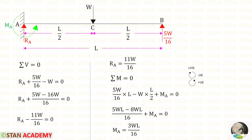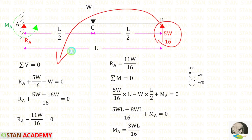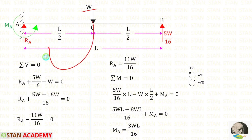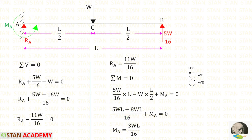Now let us apply sigma M equals 0 to find MA, taking moment about point A, moving towards the left hand side where clockwise is negative and anti-clockwise is positive. RB is acting anti-clockwise so it is positive with distance L. Load W is acting clockwise so it is negative with distance L/2. Assuming MA acts anti-clockwise, it is positive. Taking LCM of 16, finally for MA we get a positive value, confirming our assumption — MA is acting in the anti-clockwise direction.